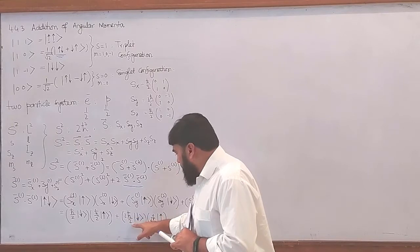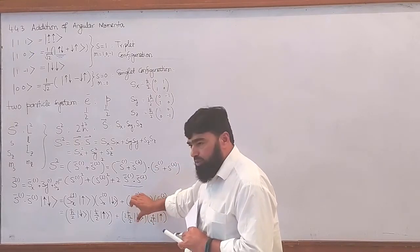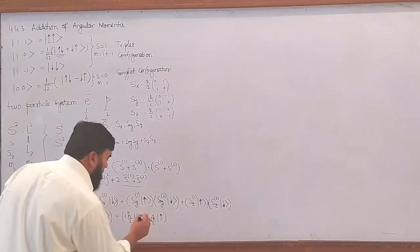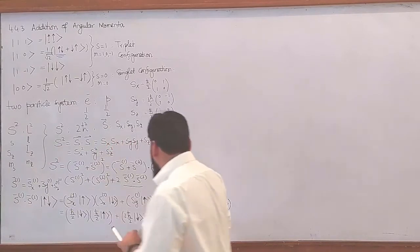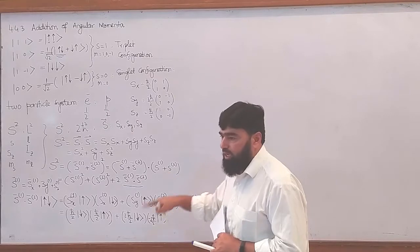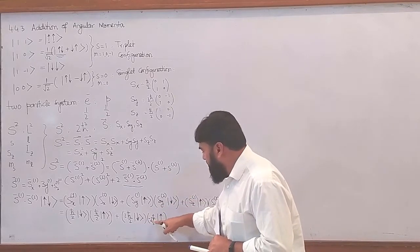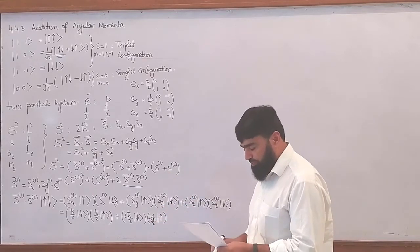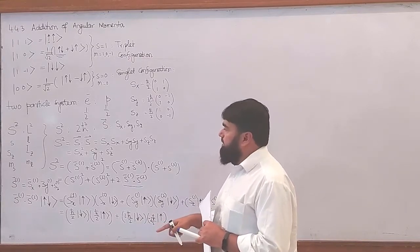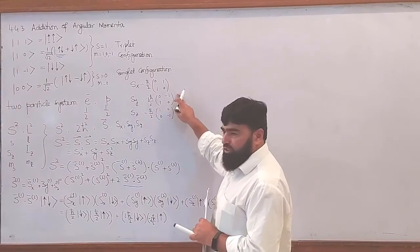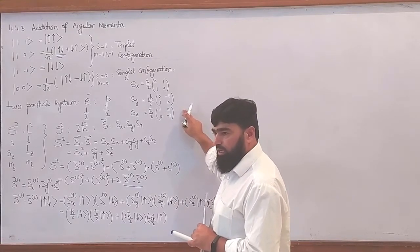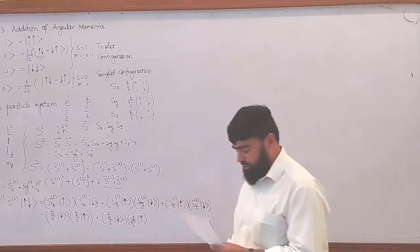For i·h-bar over 2, spin-up again gives spin-down. Here it will make this one minus i·h-bar, because here it is spin-down and for spin-down the minus sign will come out, giving minus i·h-bar over 2. You can check this: take Sy and apply it on the column vector [0,1] as we have done earlier and it will give you this result.